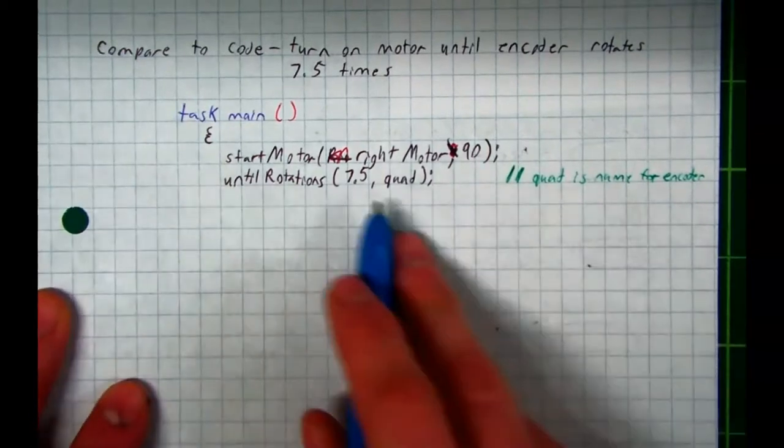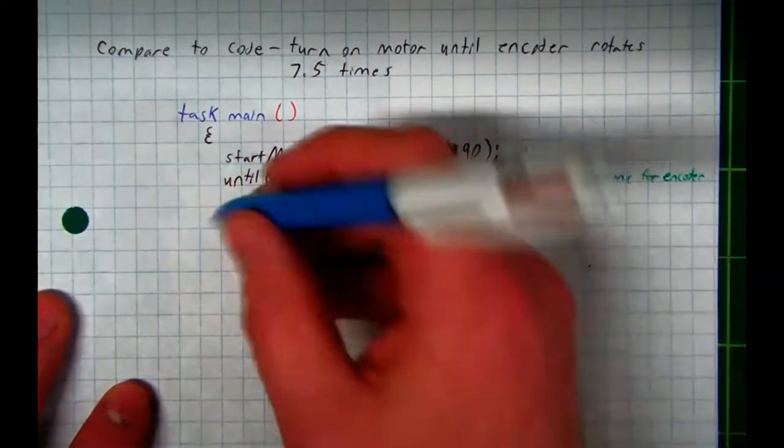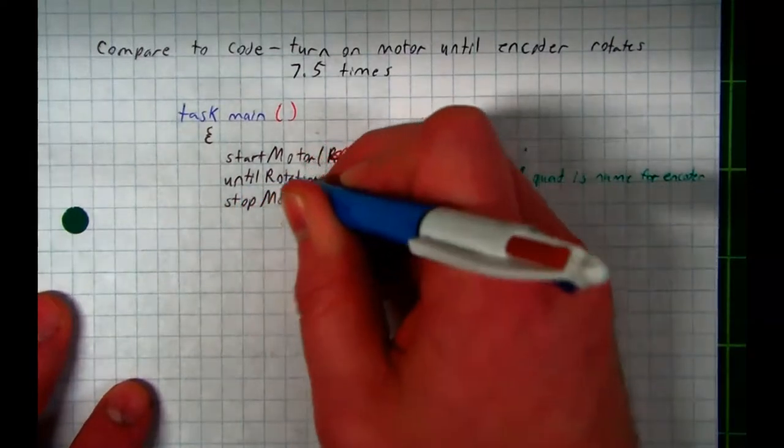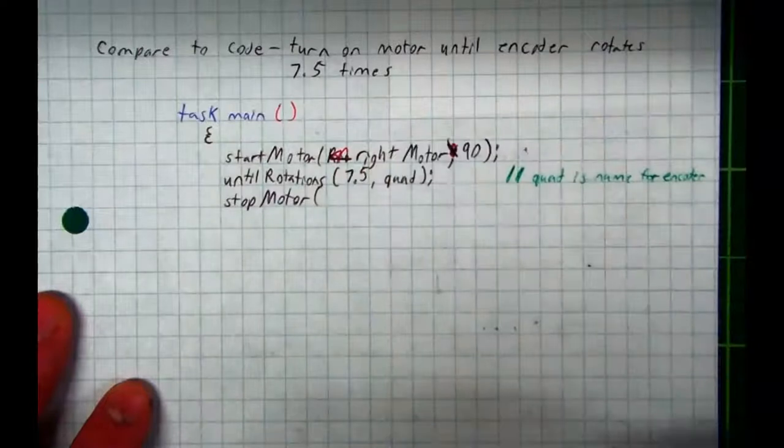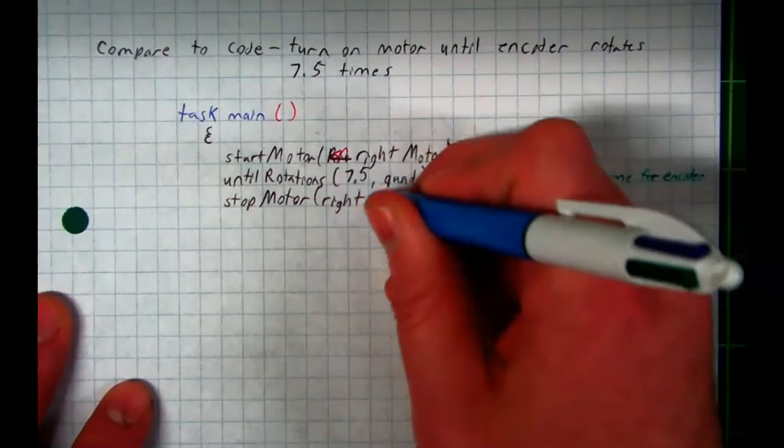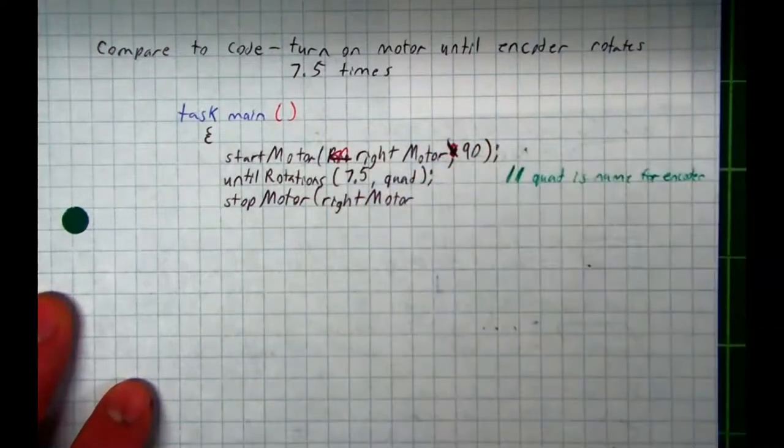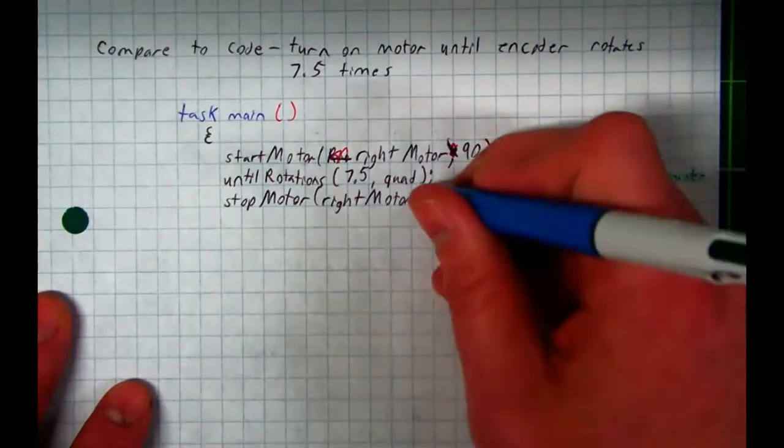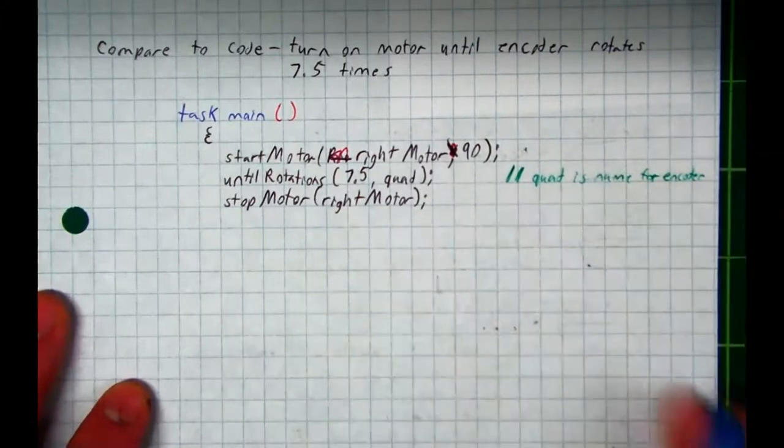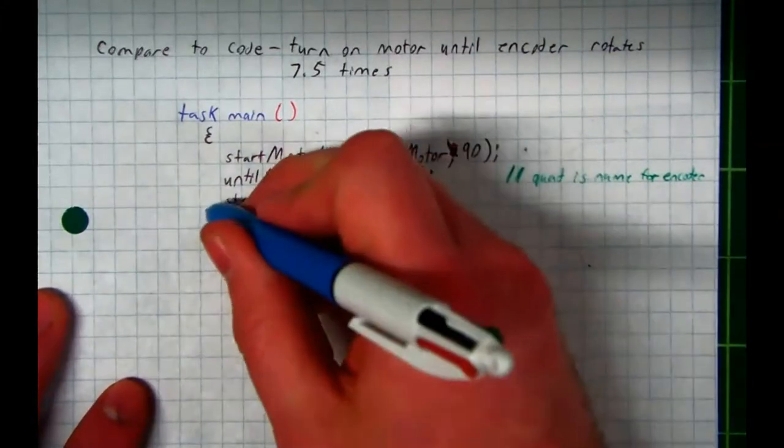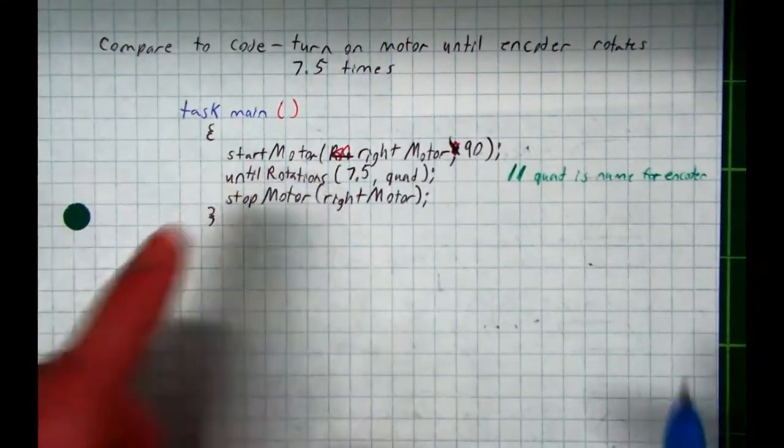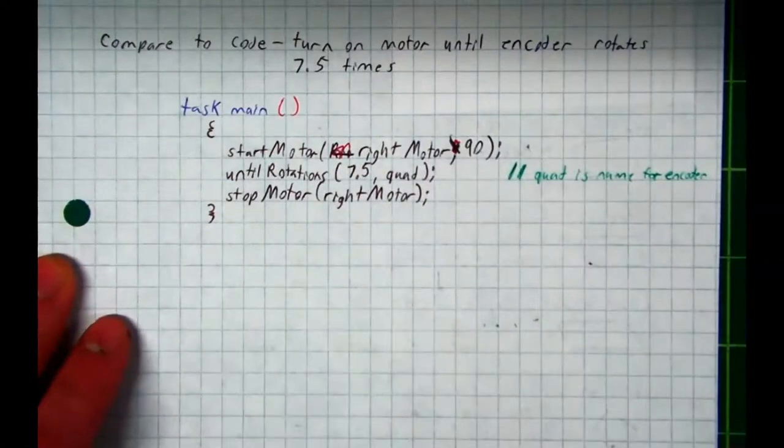And then what happens when we rotate it 7.5 times? We stop the motor. Lowercase s, stop. Uppercase M, motor. And then what's the motor again? Right motor. This time we'll write it out correctly. Lowercase r, capital M, motor. What is the speed? No speed. Good. Close your parentheses. Semicolon. If it's stopping, why do we need a speed? Then we close our curly bracket. And so hopefully you can all read this code. The motor will turn on until you twist the encoder enough times, and then it'll turn off.